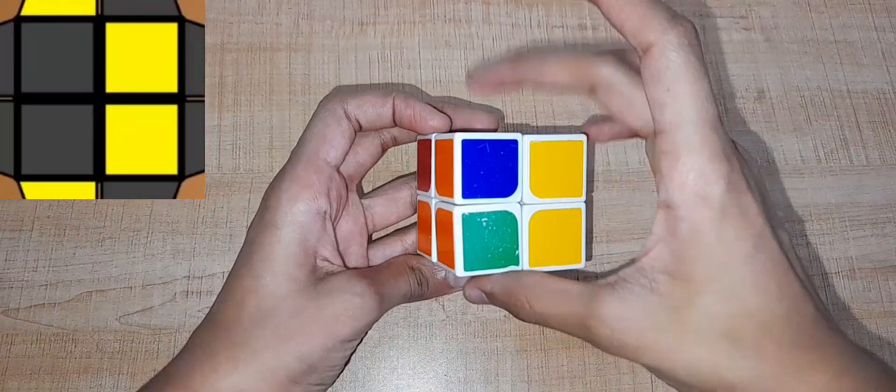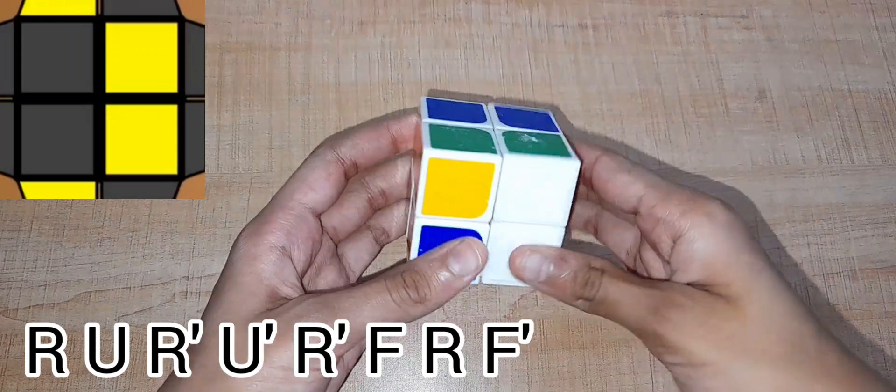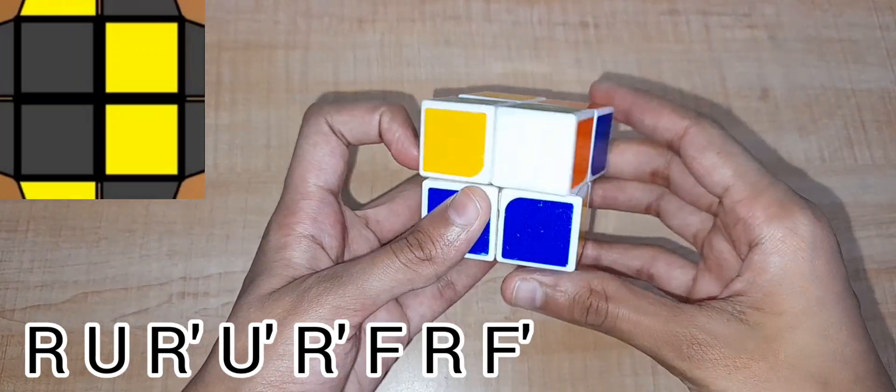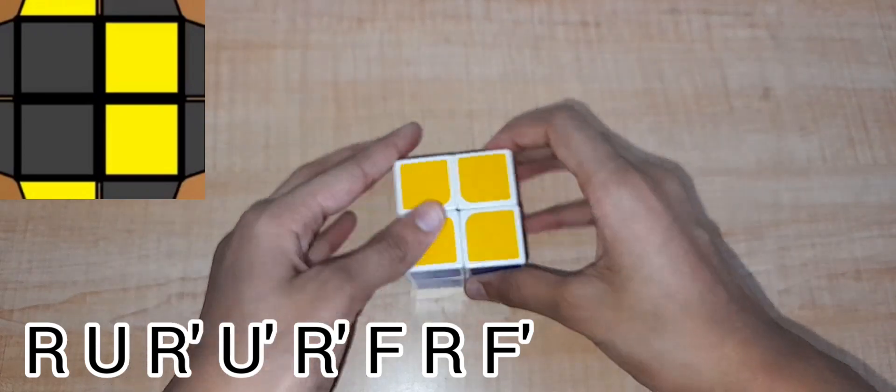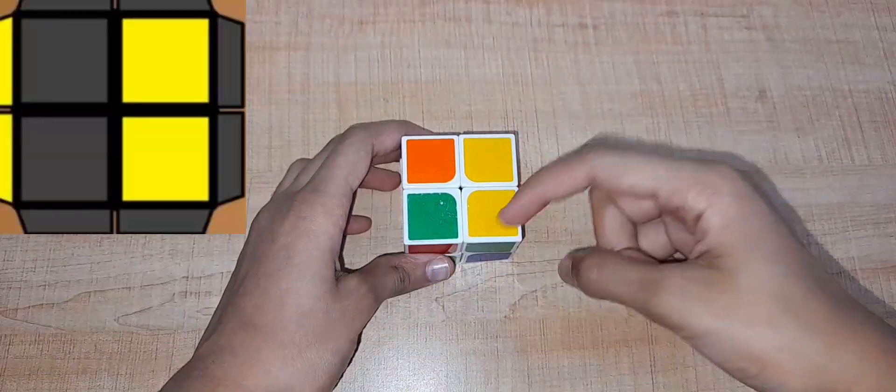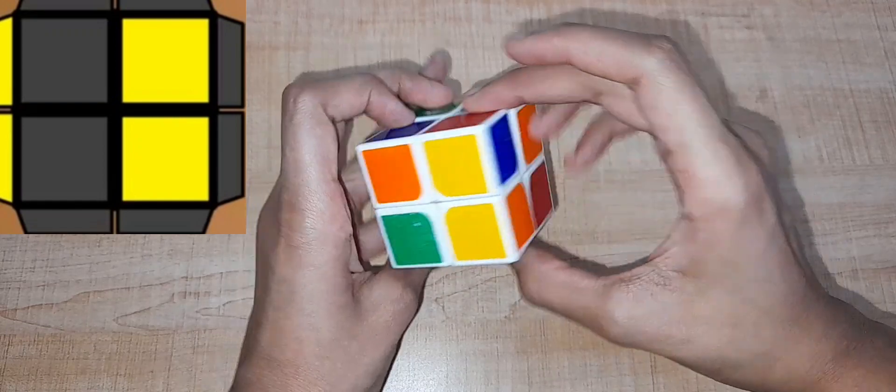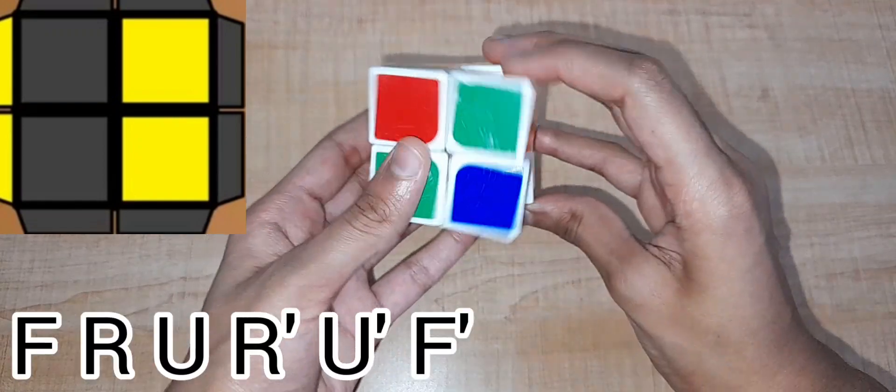If you have a bar like this and others are facing in a positive direction, do this. If you have a bar and on the opposite side there's a bar as well, do this.